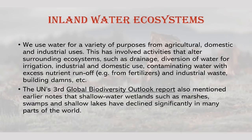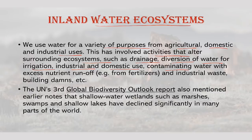Talking about inland water ecosystems, we use water for a variety of purposes — agricultural, domestic and industrial. This has involved activities that alter surrounding ecosystems such as drainage, diversion of water for irrigation, industrial and domestic use, contaminating water with excess nutrient runoff and industrial waste, and building dams.